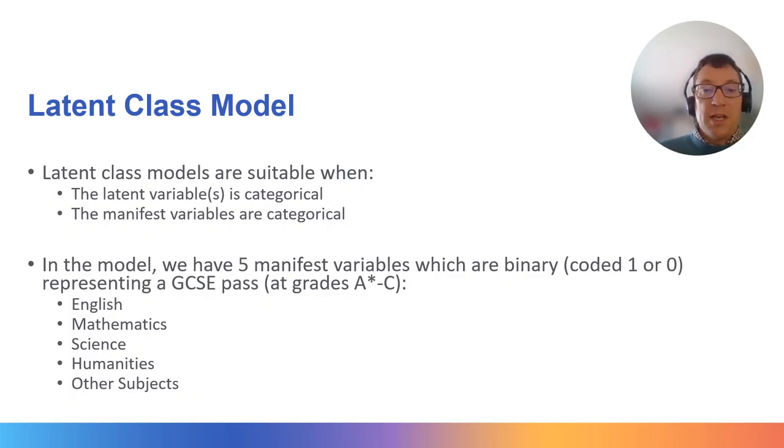In this example, I am working with a latent class model. These models are suitable when seeking to estimate a latent variable model where the manifest or observed indicator variables are categorical and when the analyst chooses to treat the latent variable as categorical also. In other latent variable models, you might instead wish to treat the latent variable as continuous and there are other latent variable models which do this.